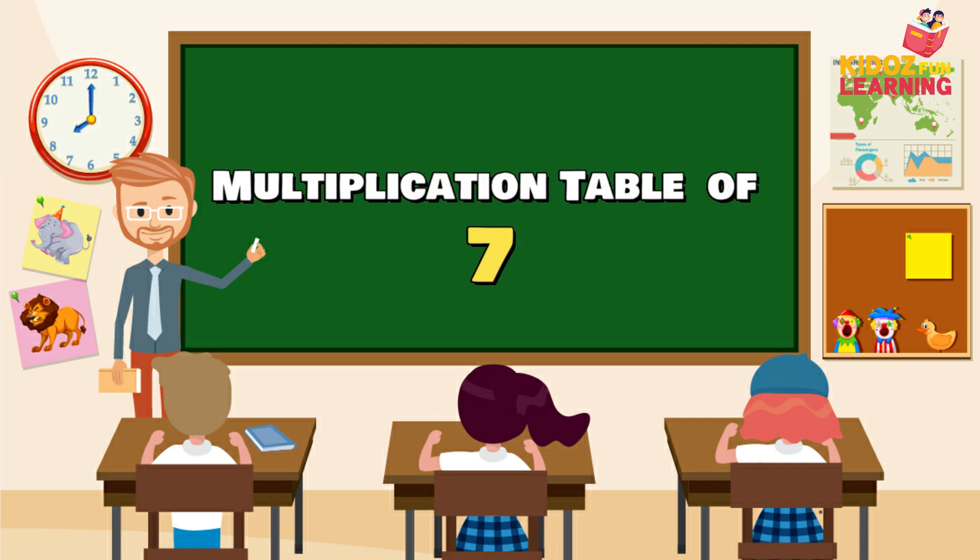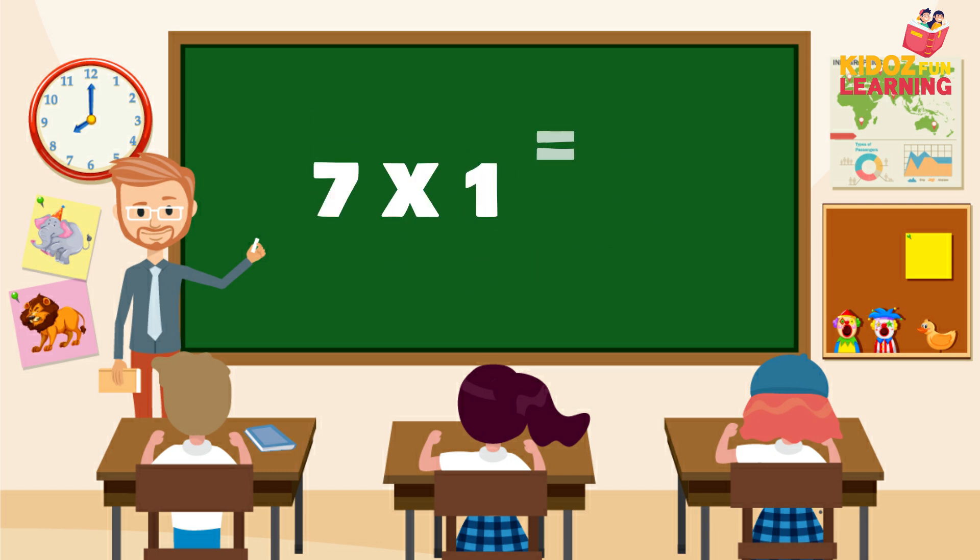Multiplication table of 7. 7 fours are 28, 7 fives are 35, 7 sixes are 42.